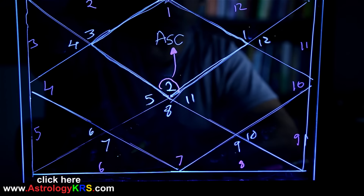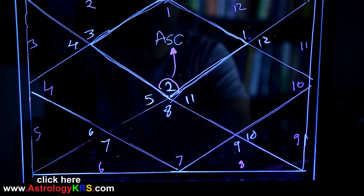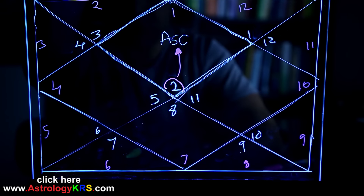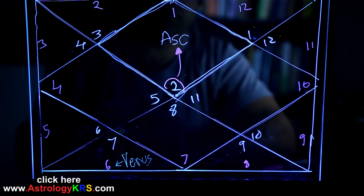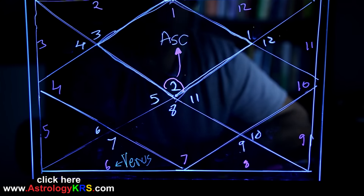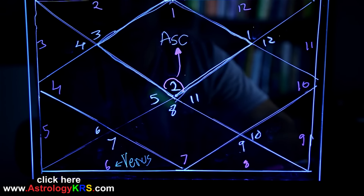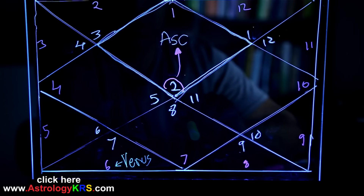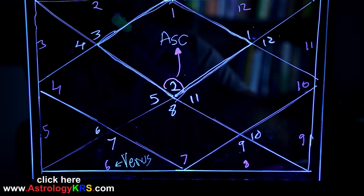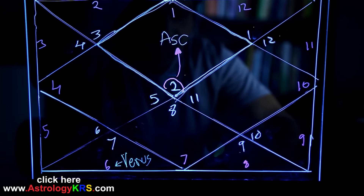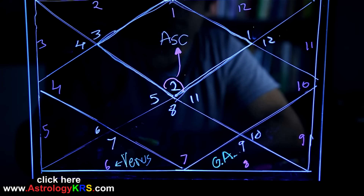Now let's do another example. This person is also a Taurus ascendant, but Venus is in the sixth house in the sign of Libra. Let's calculate the Graha Arudha. How far is Venus's sign — the ascendant, the sign of Taurus — from Venus itself? We count counterclockwise: one, two, three, four, five, six, seven, eight — it is eight places away. Now count eight places from the ascendant: one, two, three, four, five, six, seven, eight — that means the Graha Arudha is the eighth house, the sign of Sagittarius.